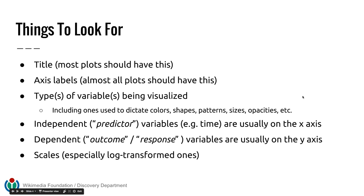There are core features of statistical graphs you should always look out for. The first is the title — that's usually your first go-to point for figuring out what exactly you're being shown. Then there are axis labels; almost all plots should have these because they're a crucial way for the audience to understand what exactly is being visualized. You should also look at the types of variables being visualized.